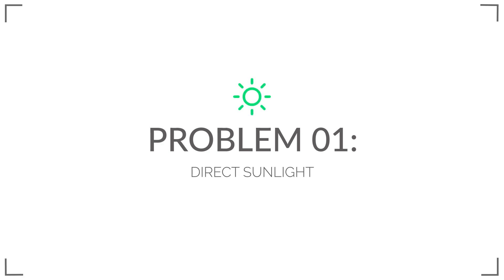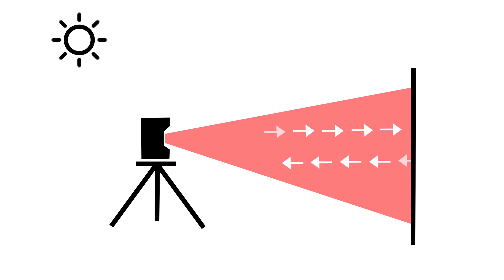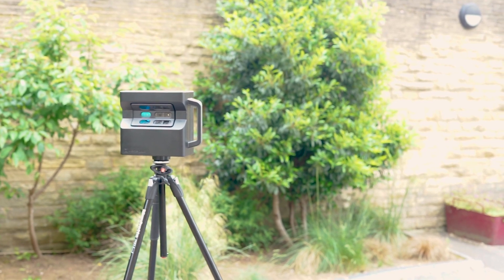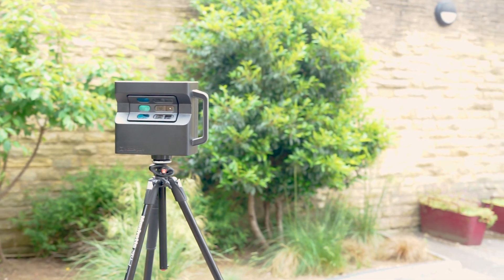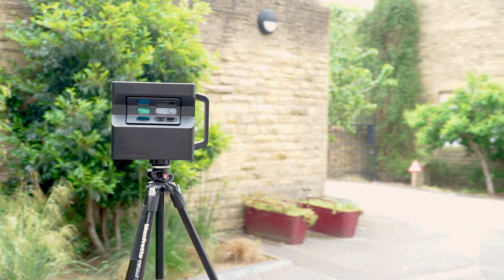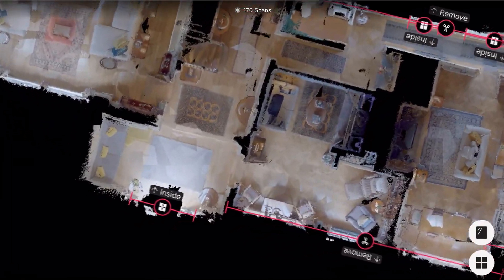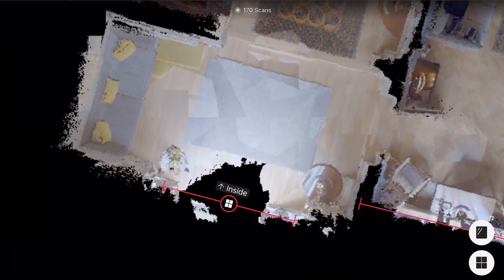Problem 1: Direct Sunlight. A Matterport camera sends out an infrared signal that bounces off the surrounding surfaces and then back to the camera's sensors. Sunlight has a substantial amount of infrared light which can interfere with the way the camera senses depth data. This can be true even on cloudy days. Scanning in or near sunlight can cause alignment errors and poor 3D geometry, which leads to issues when navigating the virtual tour and ultimately a substandard end product.